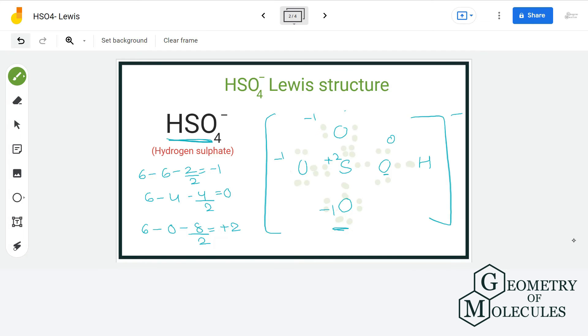Now if we calculate the formal charge, it will be 0 for these three oxygen atoms here. Sulfur and hydrogen too will have 0 formal charge but the oxygen atom here has a formal charge of minus 1.